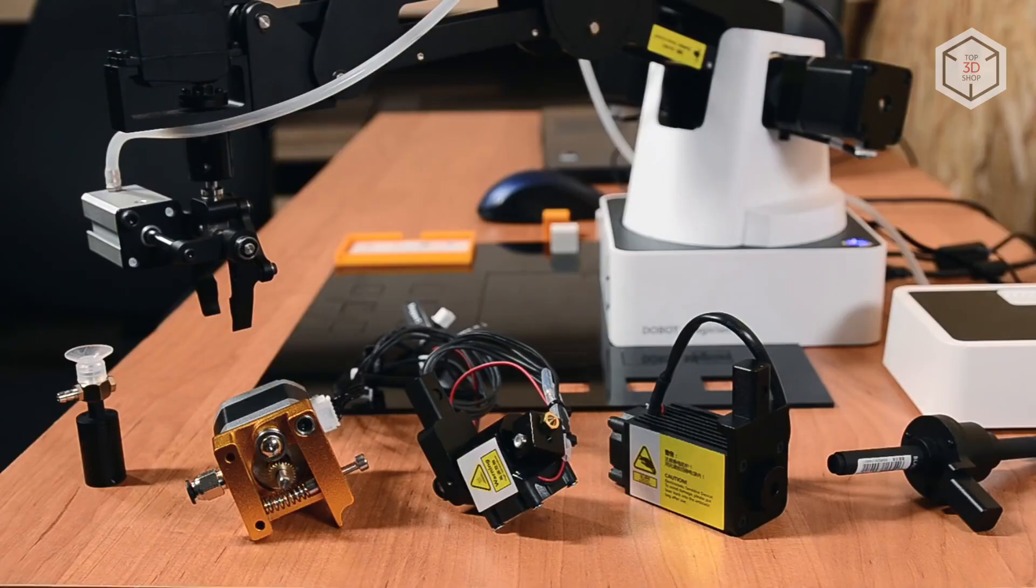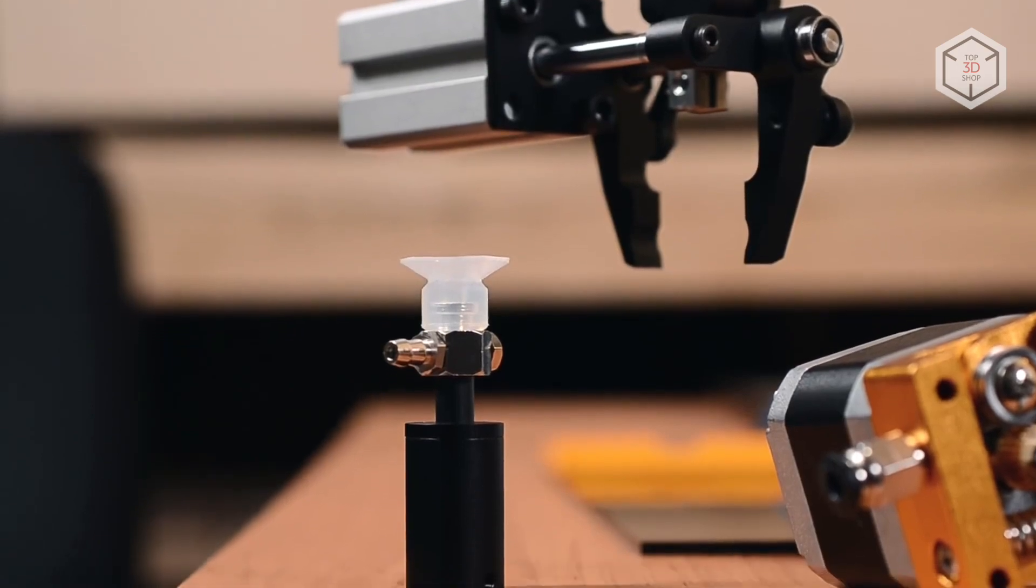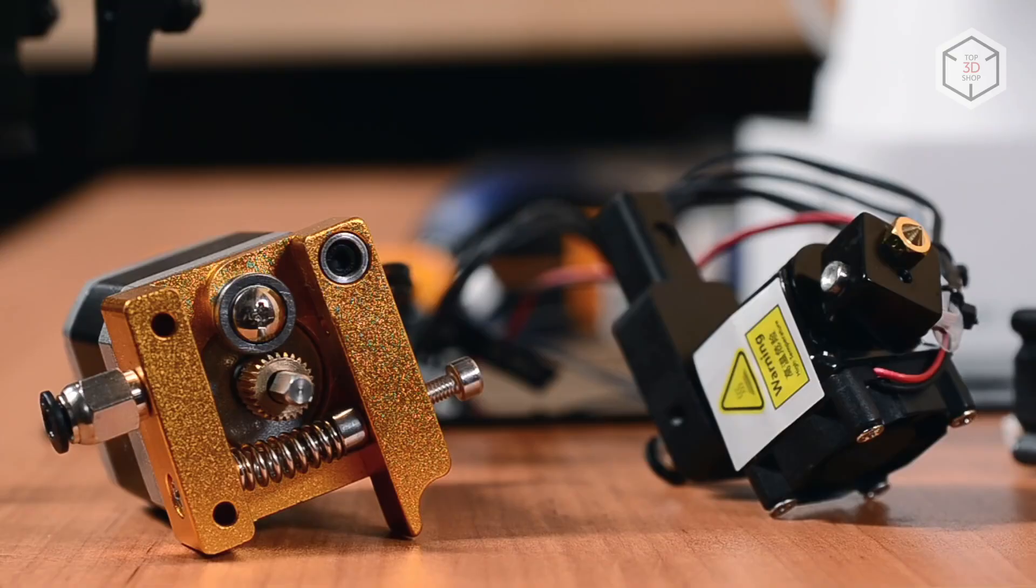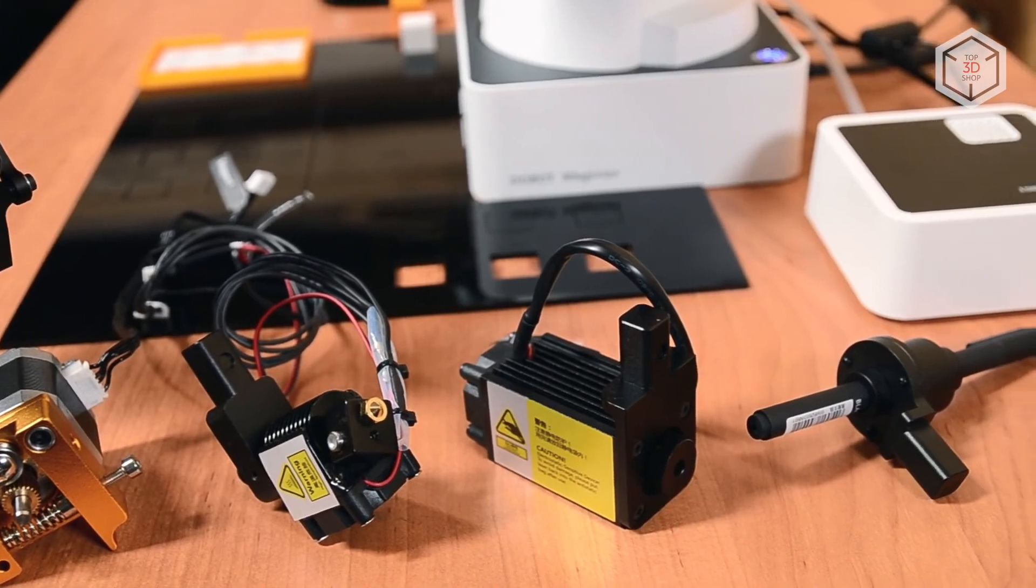The educational set comes with quick change end effectors, which include a pneumatic gripper, suction cup, 3D printing kit, laser engraver, and a pen holder.